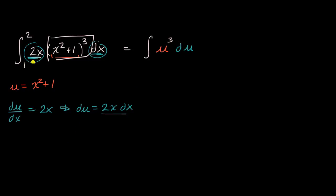Because this isn't an indefinite integral — we're not just finding the antiderivative, this is a definite integral — we need to address what happens to the bounds of integration. There are two ways to approach this. You can change your bounds of integration, because currently they're x equals one to x equals two, but now we're integrating with respect to u, so you would change them to u equals something to u equals something else.